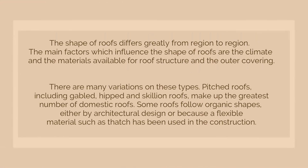The shape of roofs differ greatly from region to region. The main factors which influence the shape of the roof are the climate and the materials available for roof structure and the outer covering. There are many variations in these types. Each roof, including gabled, hip, and skillian roof, make up the greatest number of domestic roofs. Some roofs follow organic shapes either by architectural design or because of flexible material such as thatch that has been used in the construction.